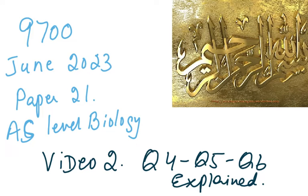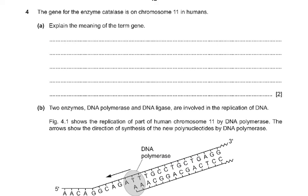Bismillahirrahmanirrahim. This is the 9700 June 2023, Paper 2, Question 1, AS level biology - the second video, which covers questions 4, 5, and 6. We've already done the first three questions in the first video.